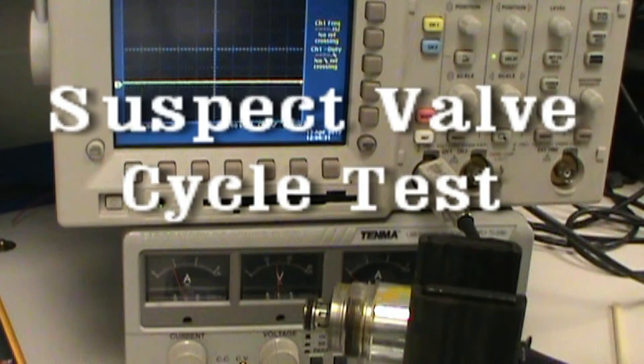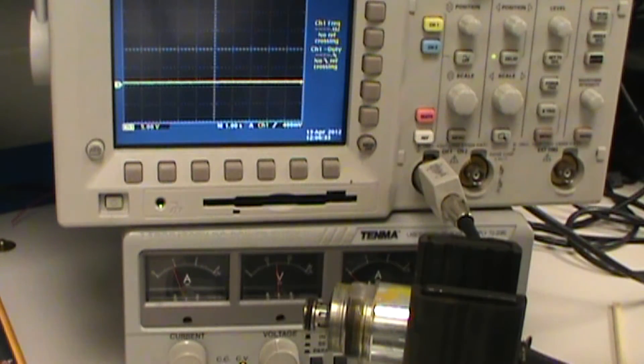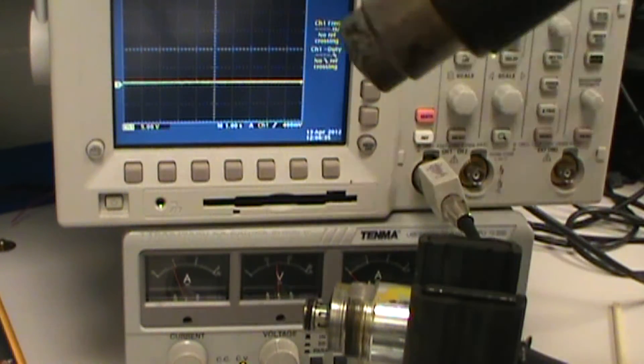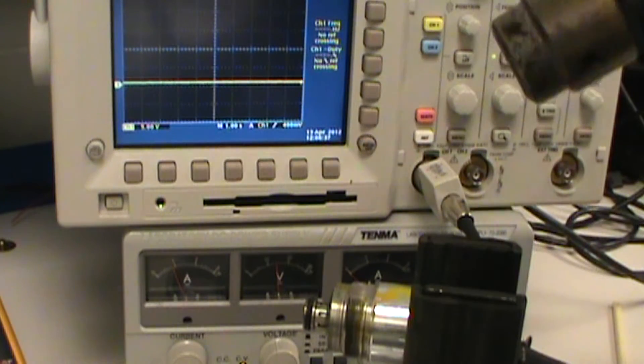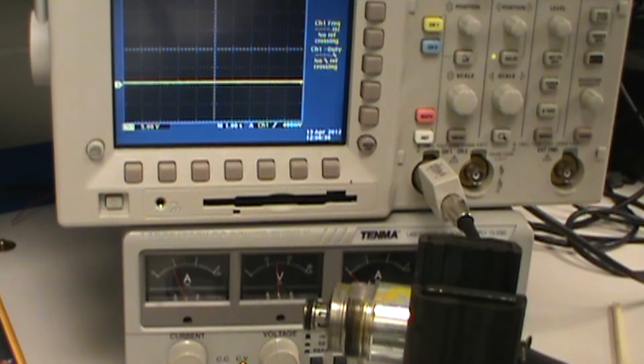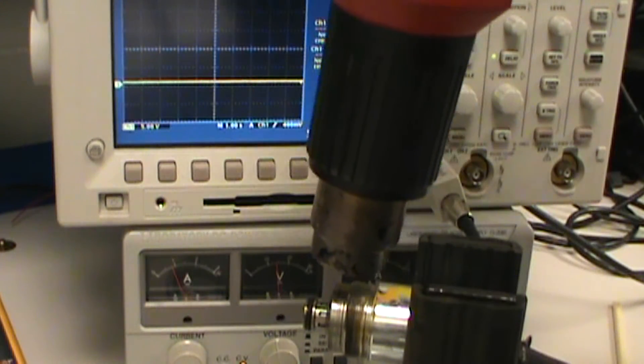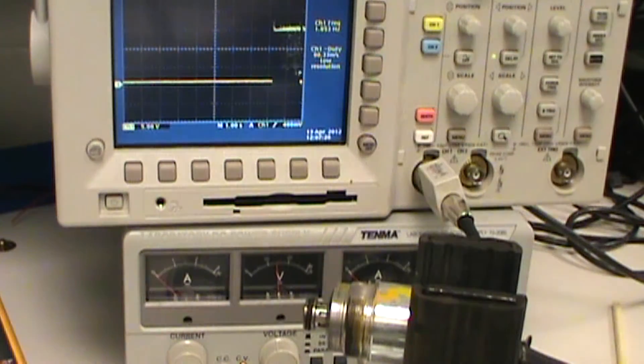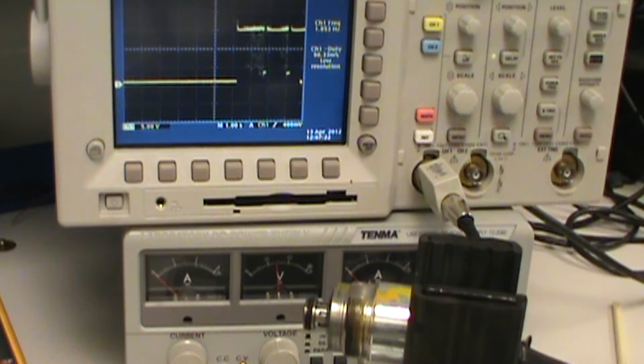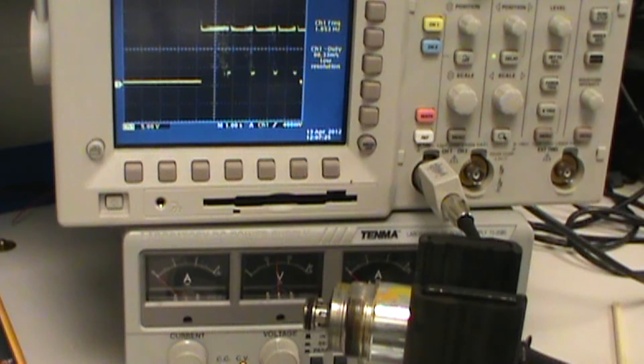Now we have the suspect bad valve. I'm going to do the same test. As you can see the coil is energized right now, pulling about an amp. And we'll heat it up. Alright, you can see it activated, the current fell off.